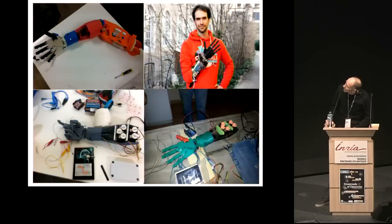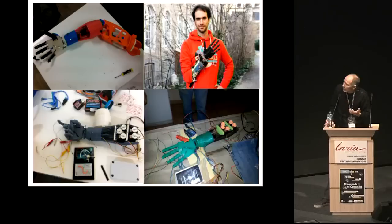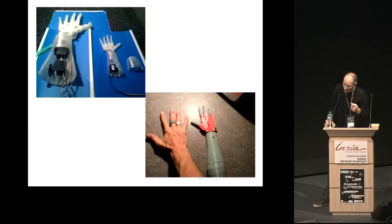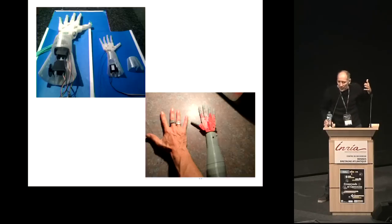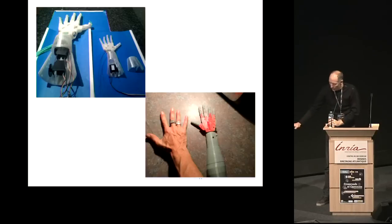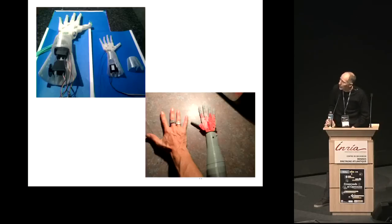Nicolas Huchet again with the hand. These are other projects — people just print them and start working on it. Some of them are doing incredible stuff. One of the next projects is to create an InMoov Junior, a smaller version, because the current robot is human-sized. Making it smaller — about 1.2 meters high — would be easier for people to start the project.